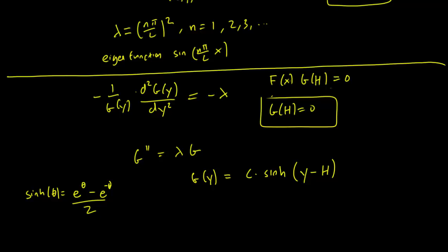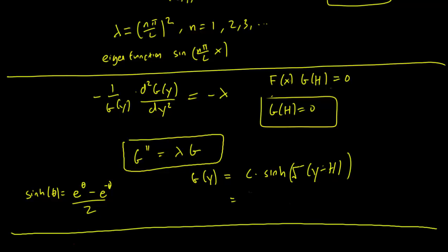And it's pretty straightforward to verify that it satisfies both the equation g double prime equals lambda g and the initial condition g(h) equals 0. Whoops, I forgot to add a square root of lambda term over here. And of course, this is just going to be sinh of (n pi over l times (y minus h)), since the lambda was (n pi over l) squared. Here, n is going from 1, 2, 3, and so on.